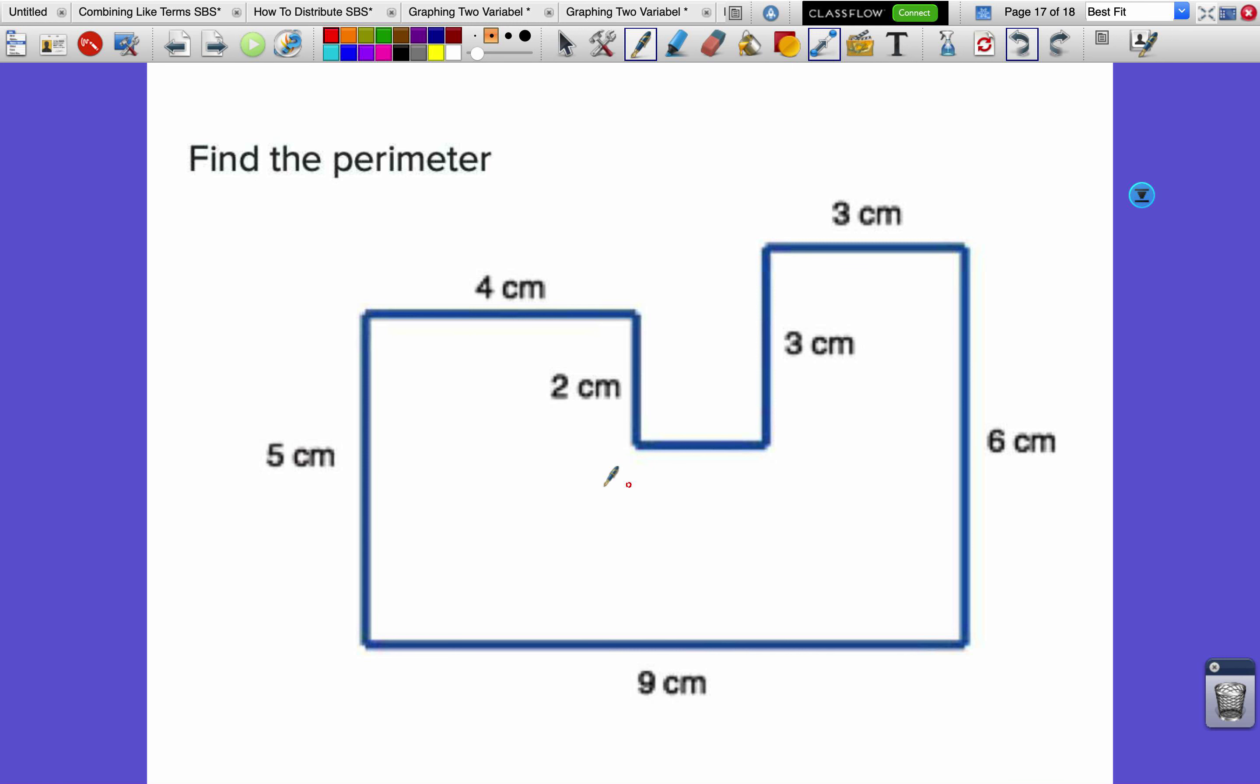Hopefully you have sketched it. We have almost every single length except we're missing this one right here. So what we're going to do is cut it into rectangles. I'm going to cut right here and right here so I get a straight line including the one that's missing. We know that that whole line is 9 centimeters because of the opposite sides of rectangles have the same length rule.